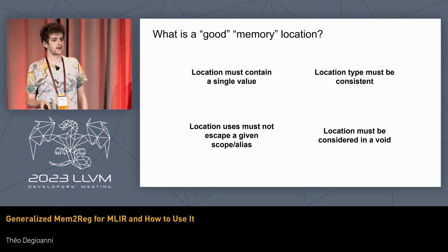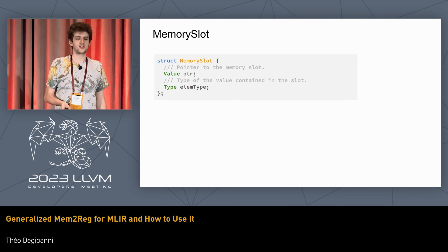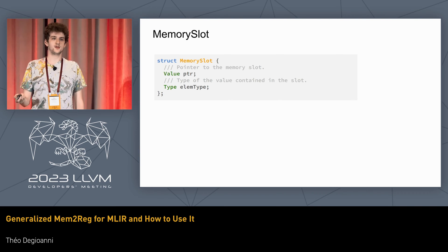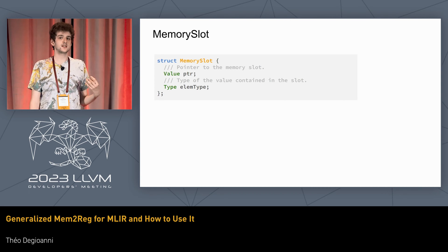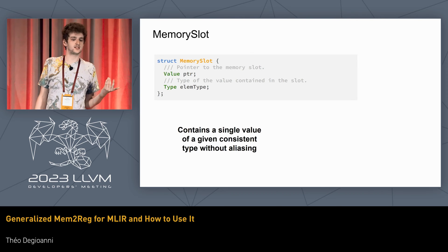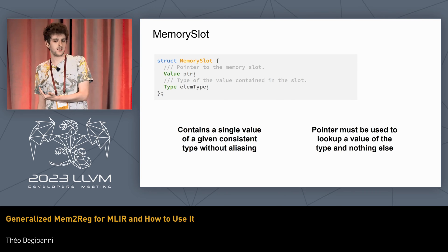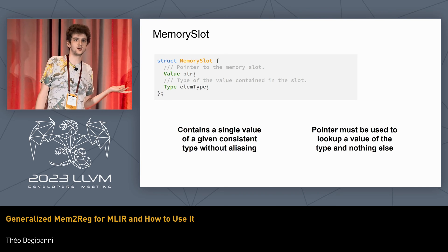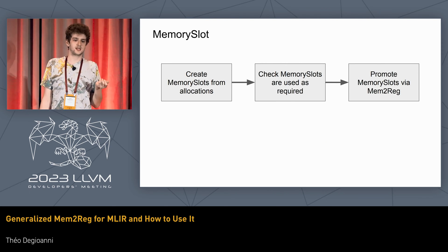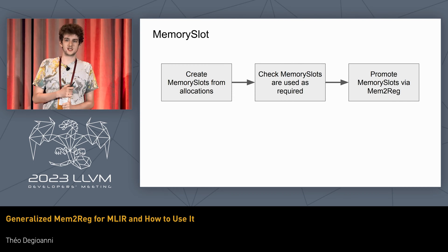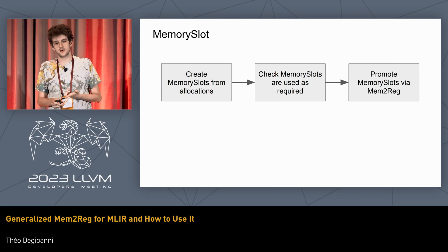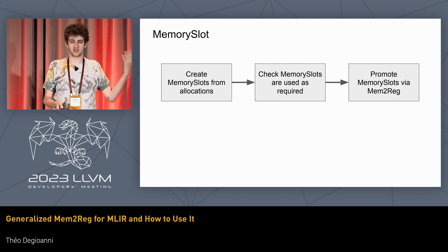To model this, we have the MemorySlot structure, which represents a memory location. You have a pointer to the memory location you're trying to model, and a type — the type you expect it to be used as. So for a memref, that's I32. Then you need to check it contains a single value, does not alias, doesn't escape, and that the pointer is used to look up the value in a consistent way. There are three main steps before we run Mem2Reg: detect where allocations of memory slots are performed, check that all those memory slots are used properly, and then understand the content of the memory slots to actually run the algorithm.